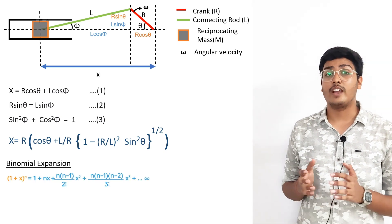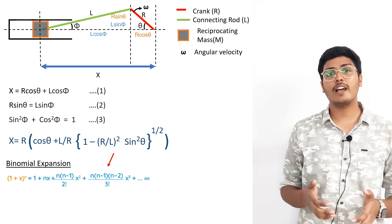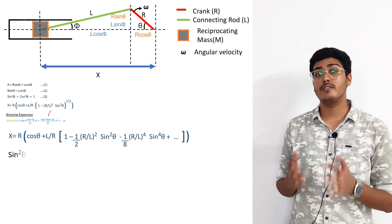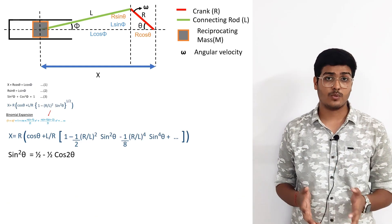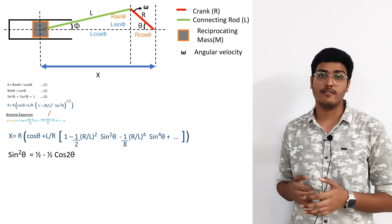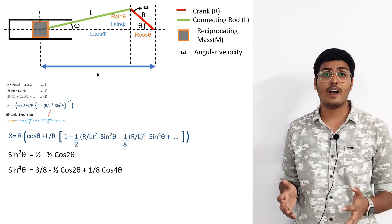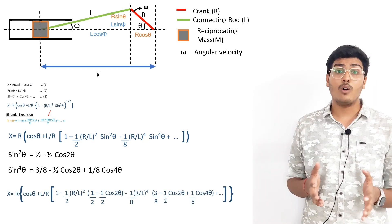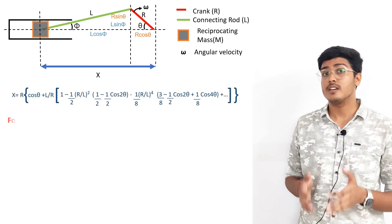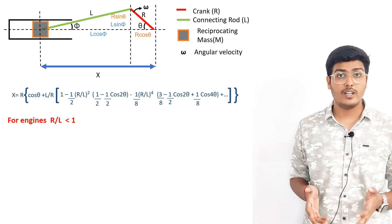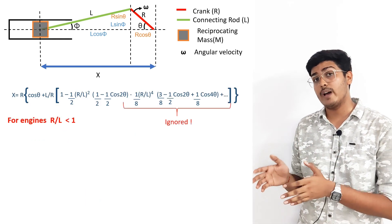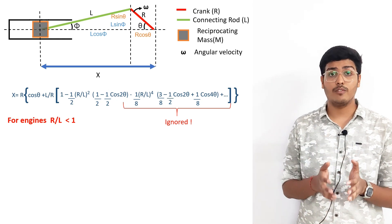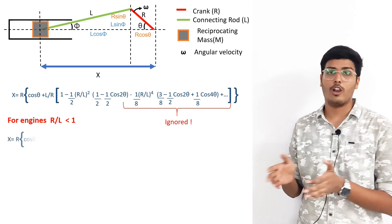On expanding by the binomial theorem we get the following value of x. Using the trigonometric identities for sin²θ and sin 4θ and substituting, we get the updated value of x. Now for engines the value of r/l is less than 1, so higher powers of r/l can be ignored, and we can approximate x by the following simplified equation.